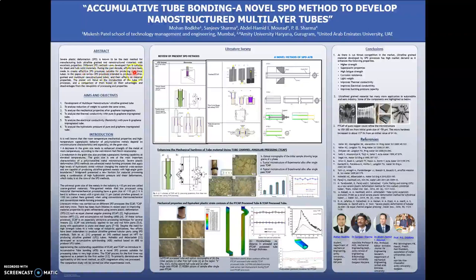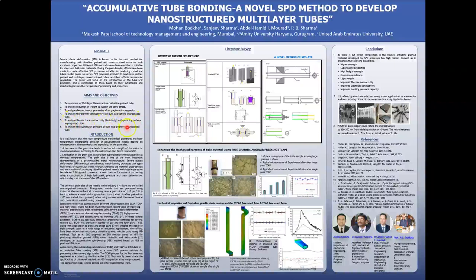The process will enhance the strength and hardness, and mechanical properties will be improved. The aim of developing this process is to develop ultra-fine grain nanostructured tubes, to analyze the reduction of weight while sustaining the same stress, to analyze thermal conductivity, and to analyze electrical conductivity — ensuring improvement in both electrical and mechanical properties.